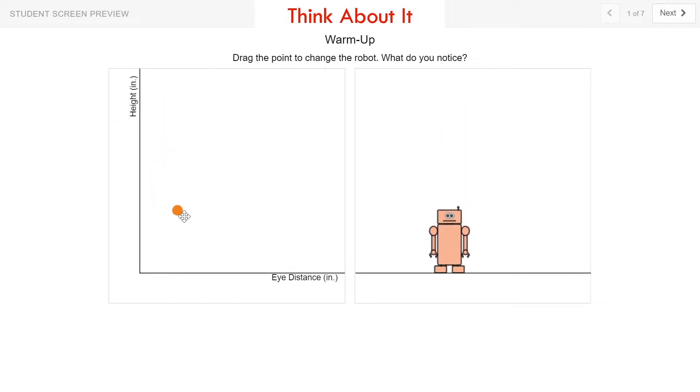It can be helpful to look at two separate ideas. One is, what happens when I try to keep the point at the same height and move left to right? And how does the robot change if I try and keep the same horizontal distance and just move the point up and down?